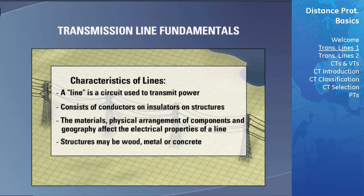For example, wood pole lines tend to have a much larger zero sequence impedance than a steel tower line. Since this impedance is much larger, the total impedance to ground is also generally larger, which may cause problems for a ground distance element. In a case like this, you may need to change your protection scheme to include an additional directional ground overcurrent element to find an effective solution.